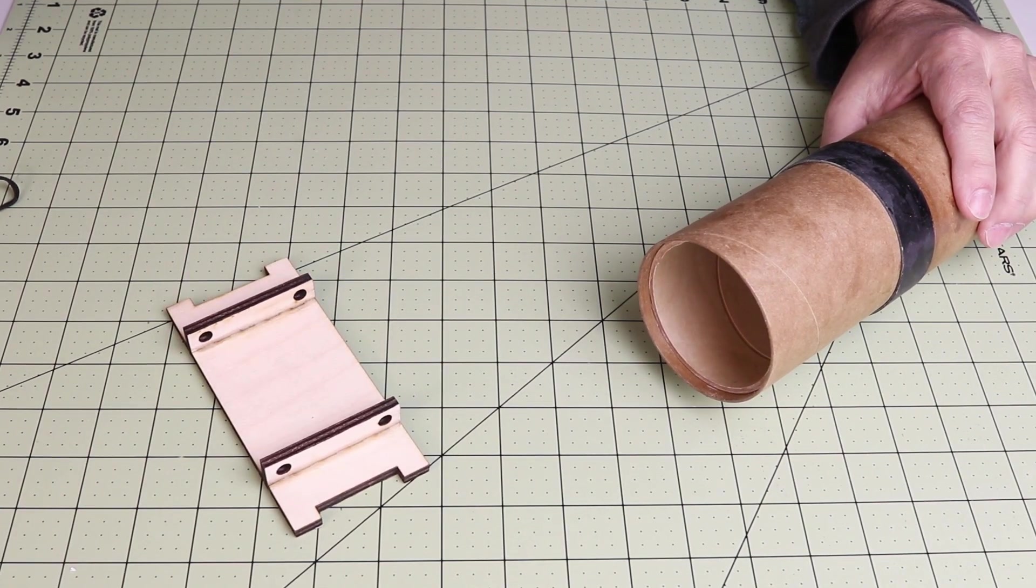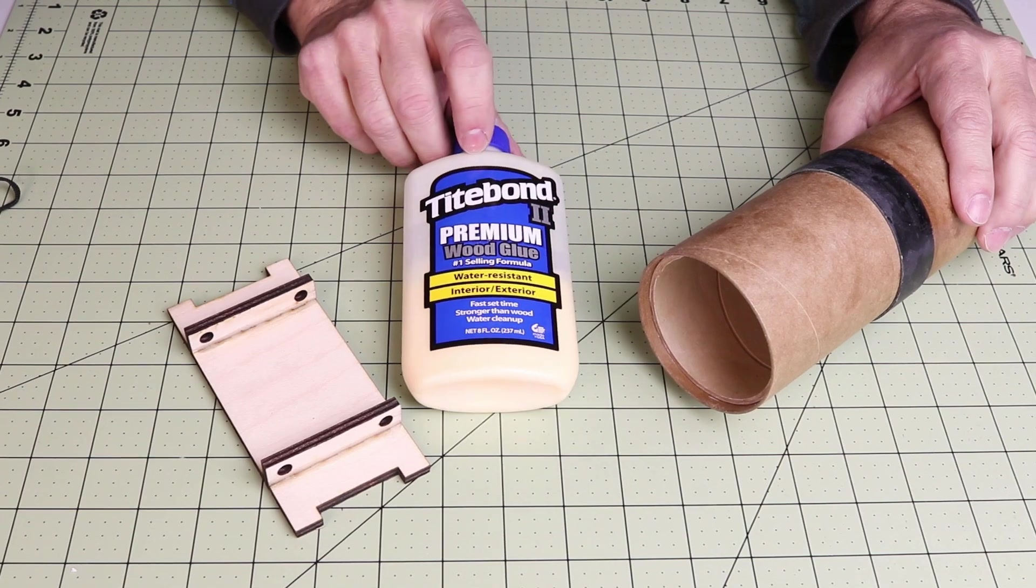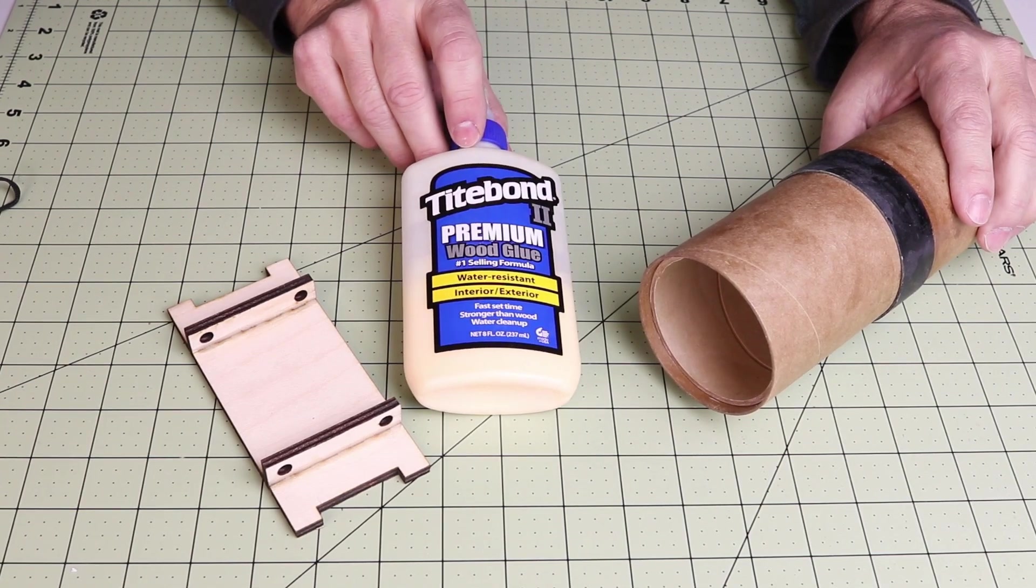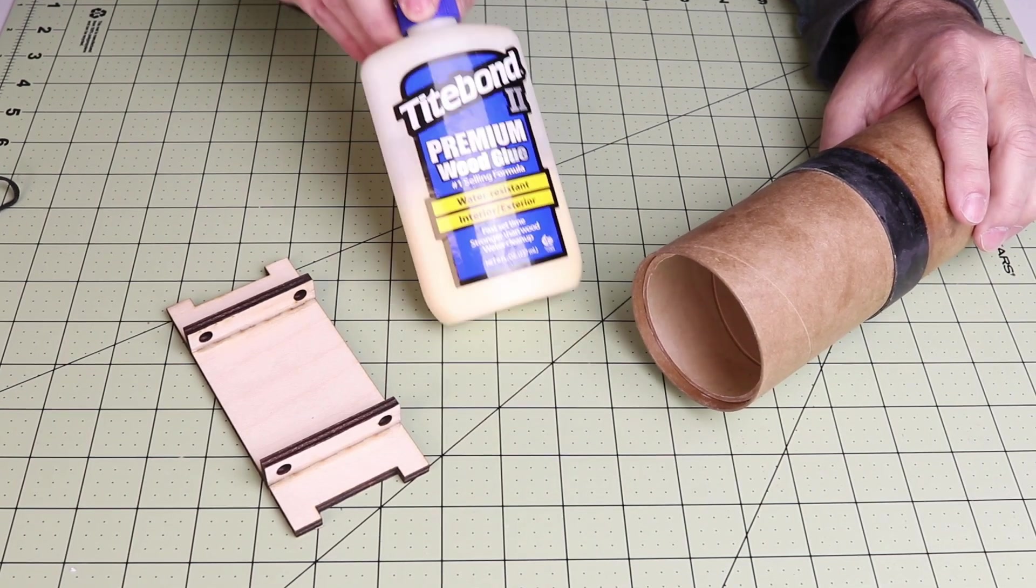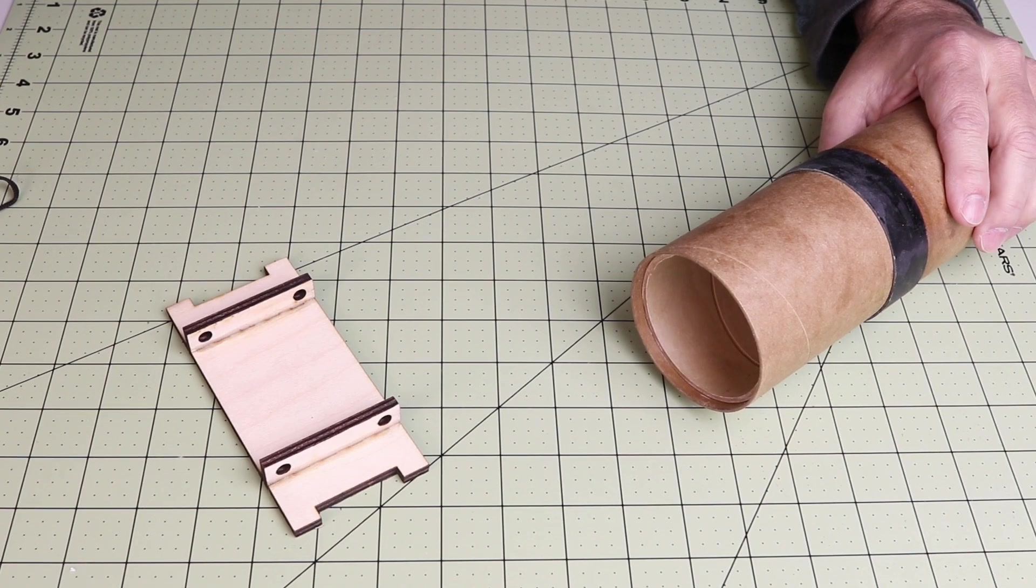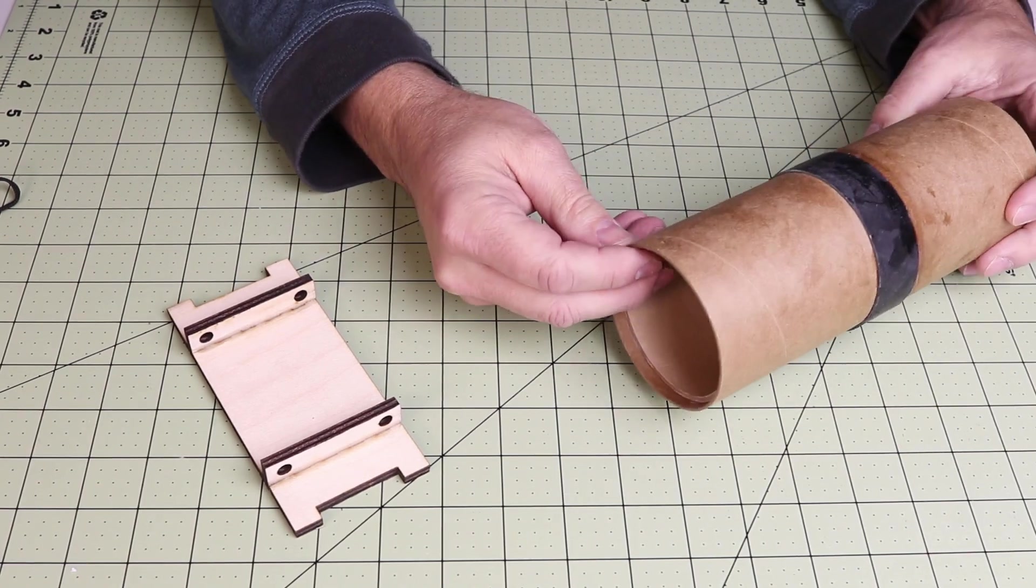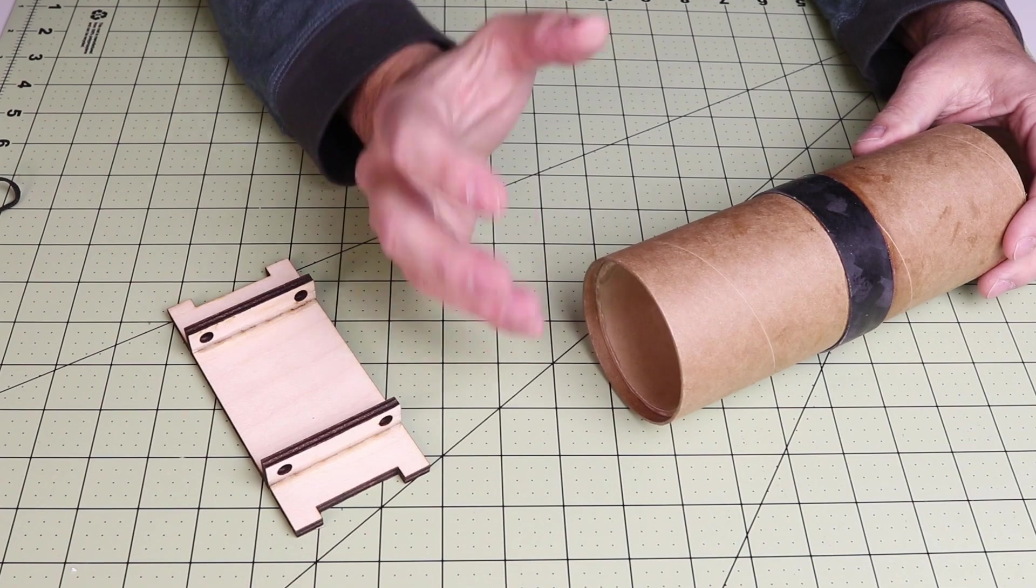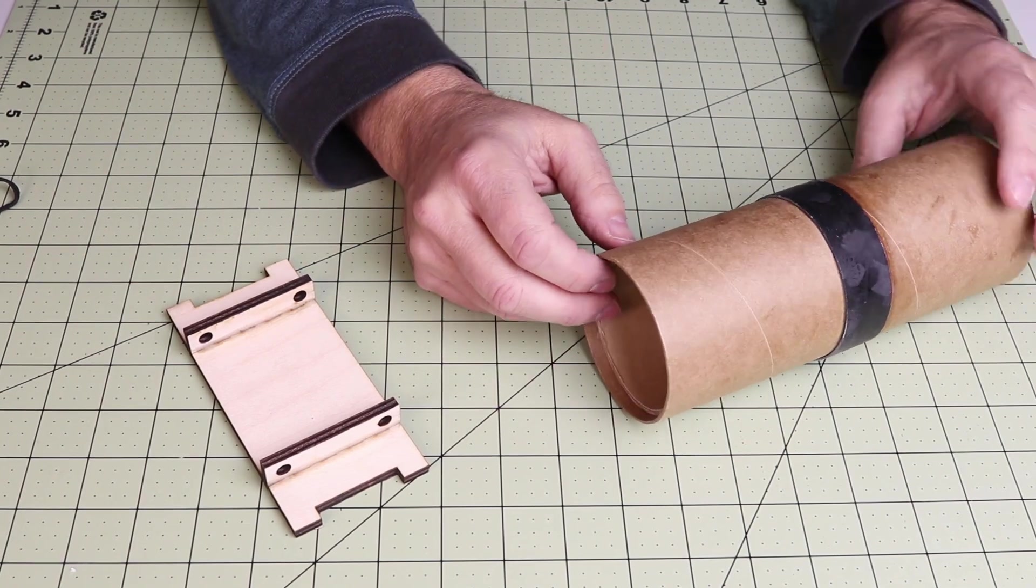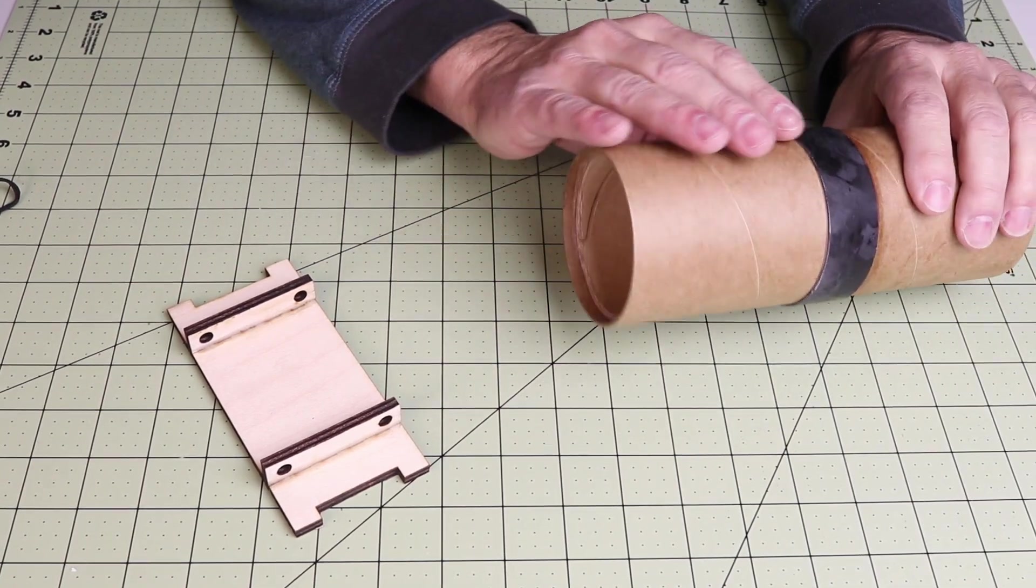Now, I prefer the ProBond over a carpenter's glue like this Titebond 2 or really it could be any kind of yellow carpenter's glue because it's slippery and you can get the parts where you want them before it grabs and sets up. So it's really easy to work with.